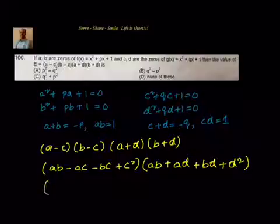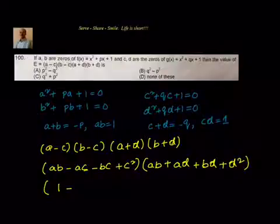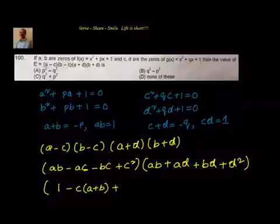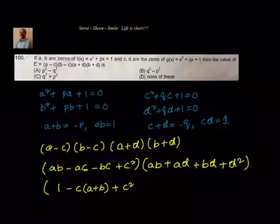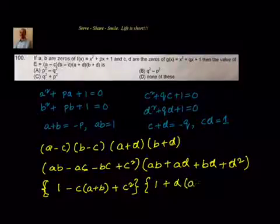Now we substitute the known values. We know a·b = 1, so (a − c)(b − c) becomes 1 − c(a + b) + c². Since a + b = −p, this gives 1 + pc + c². Similarly, (a + d)(b + d) becomes 1 + d(a + b) + d², and substituting a + b = −p gives 1 − pd + d².